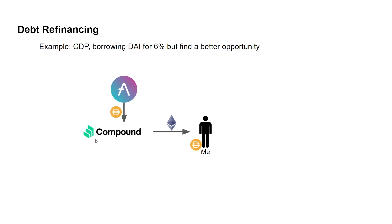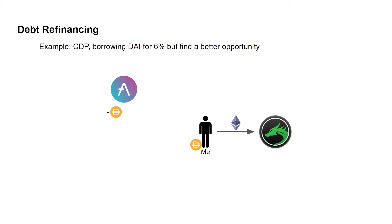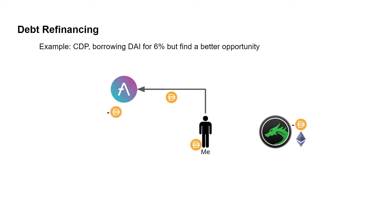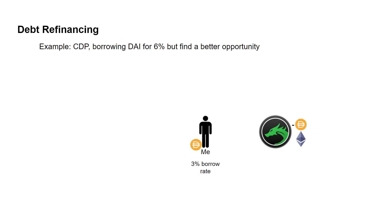Once Compound has their DAI back, they release my ETH collateral. I take that ETH and deposit it as collateral on Iron Bank, where I can borrow DAI at 3%. I then use that newly borrowed DAI to pay back Aave. My final position: I'm borrowing DAI at 3% from Iron Bank with my ETH as collateral there instead of Compound. In summary, I refinanced my loan using a flash loan to move from a 6% to a 3% borrow rate without disrupting my DAI usage.